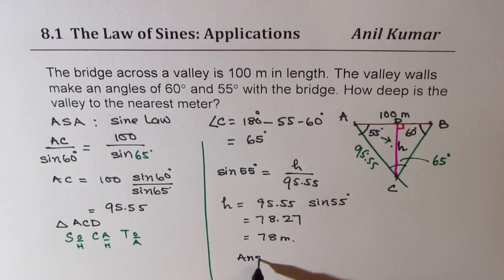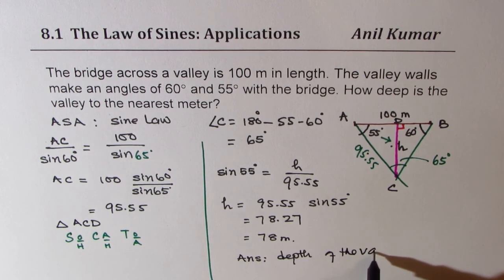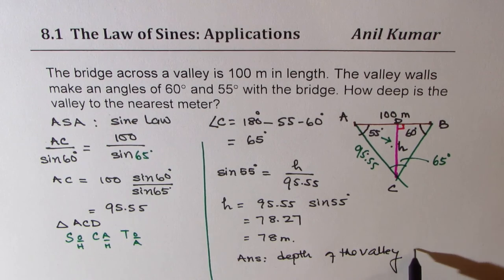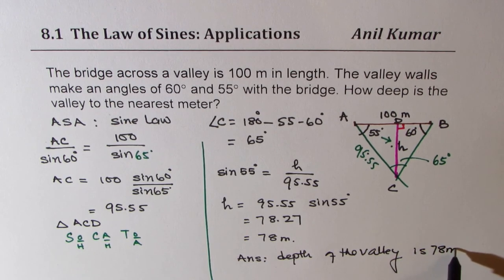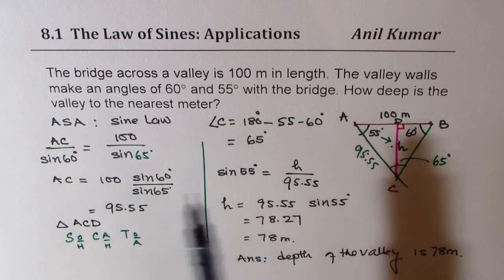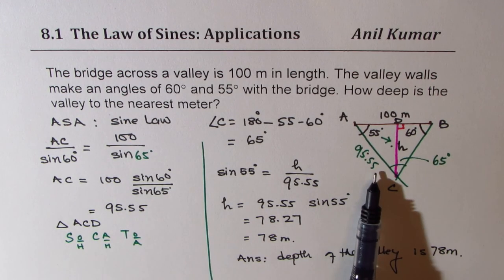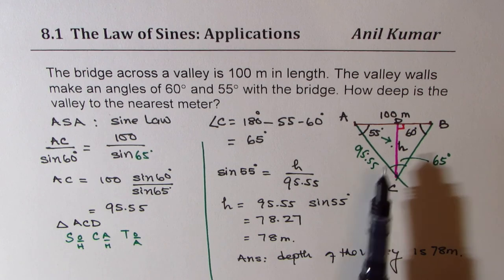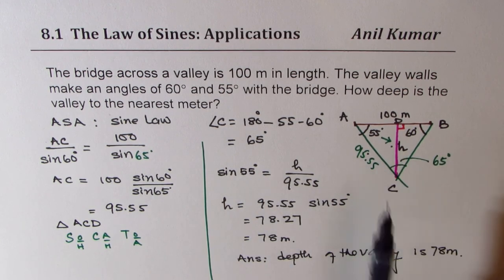So our answer is the depth of the valley is 78 meters. So that is how you're going to solve it. We applied the sine law to find one of the sides. And then we applied the sine ratio to find the depth of the valley. So I hope the steps are clear.